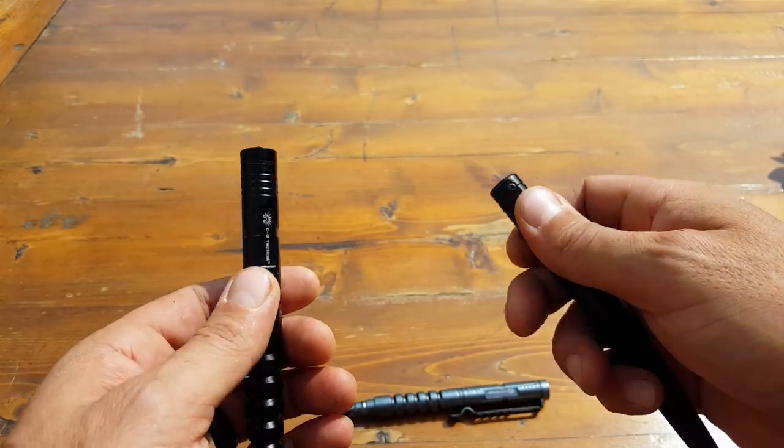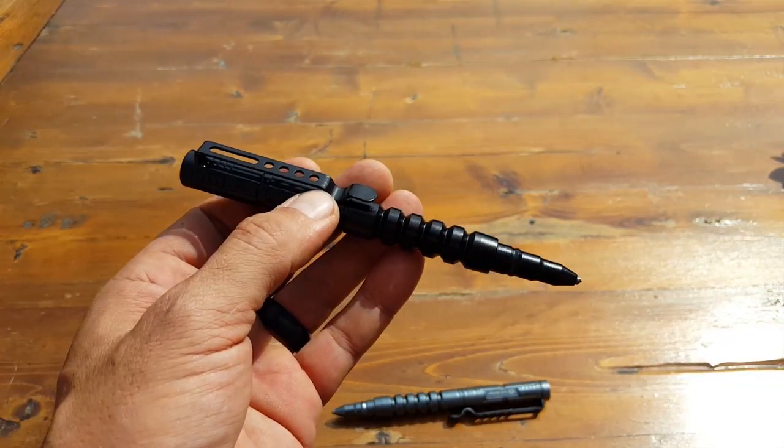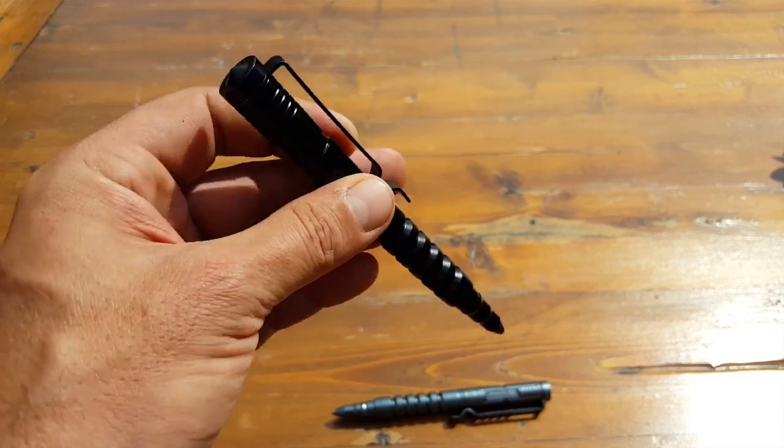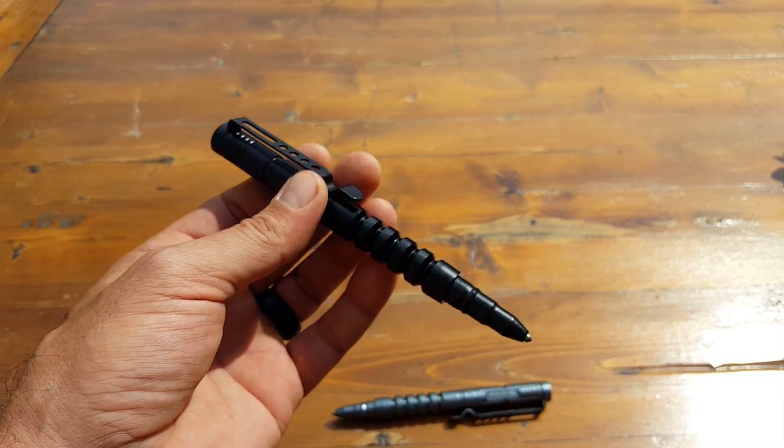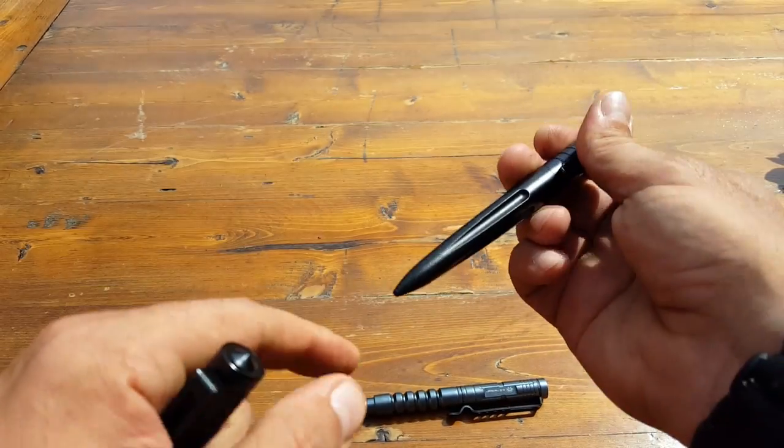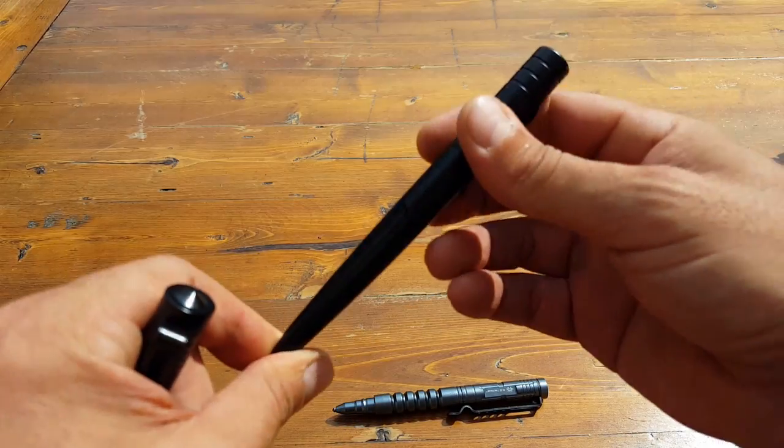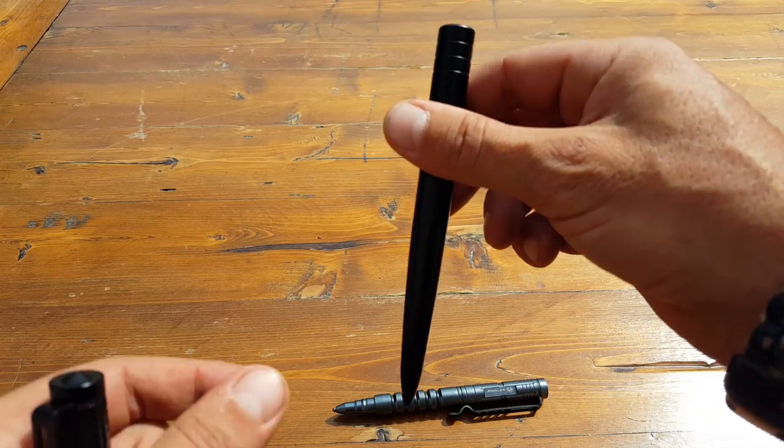This is something that I would really like to keep in my go bag just because of the dimensions, just because of the way it looks and also the features that it has, such as this glass breaker, where this one doesn't have that. But once again, easier to conceal inside of my travel bag, TSA isn't going to stop me and ask questions.